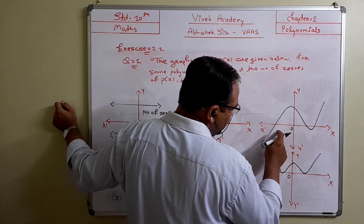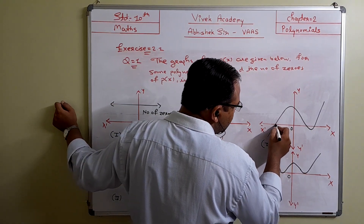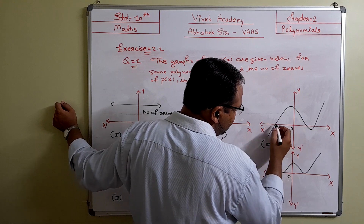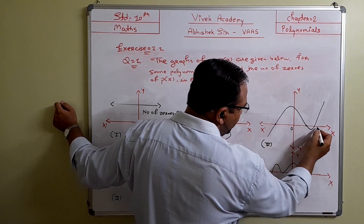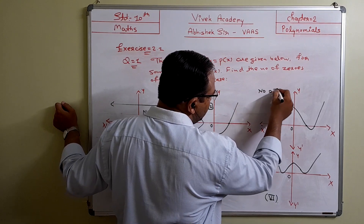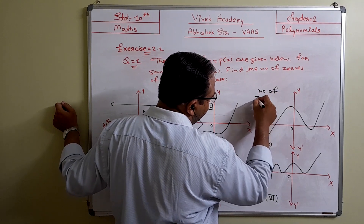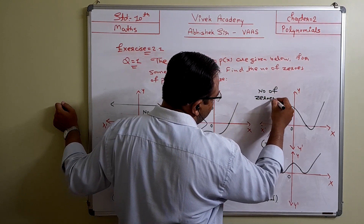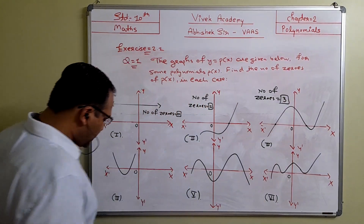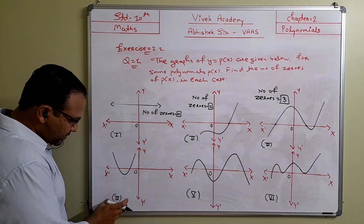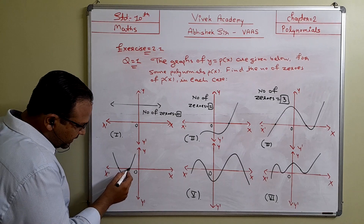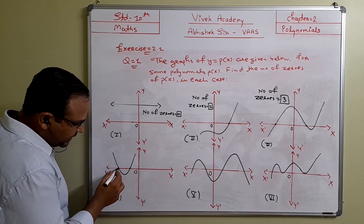In question 3, the graph is intersecting the x-axis at one point, two points, and three points, so the number of zeros is 3.